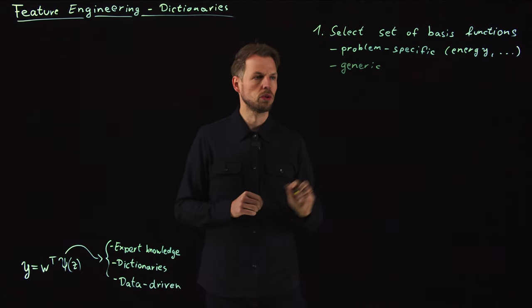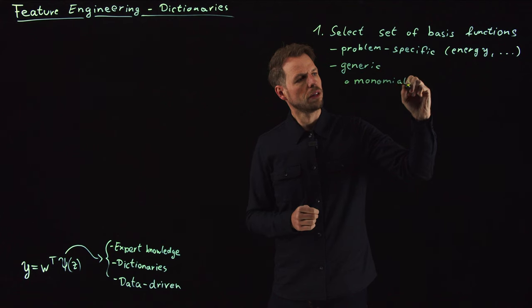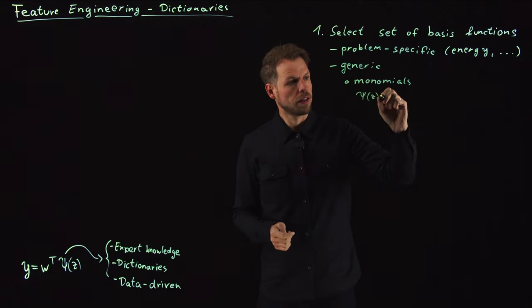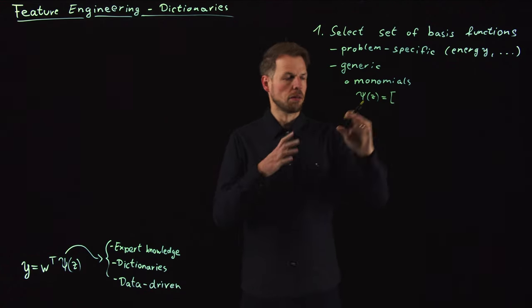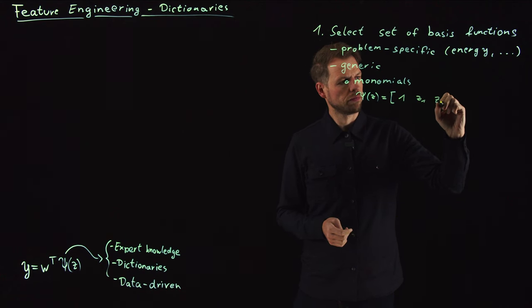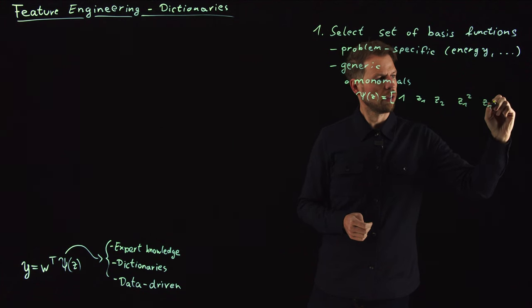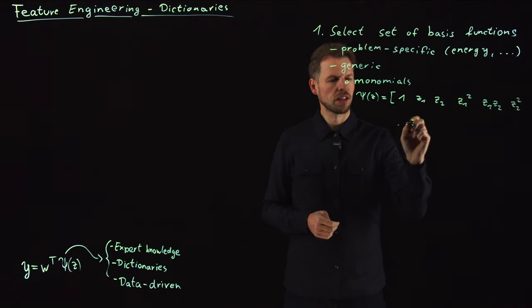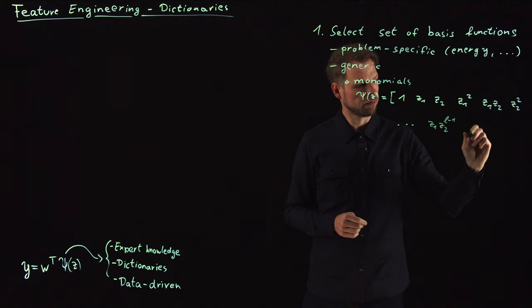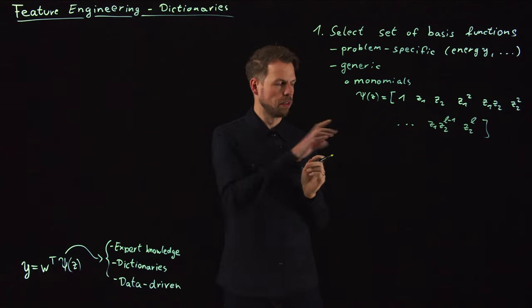One very popular approach to take is to take monomials. What this means is that you take polynomial terms but then one by one. So what your psi of z then becomes is, and I'm going to take an example with a two-dimensional input here, is that you get monomials of certain orders. So you take a constant function, you take maybe the z1, z2, and then you take combinations of these to a certain degree. So you can take z1 squared, z1 times z2, z2 squared, and so on. This can go on as long as you like until you are at the end at z1 to the power of l minus 1, and then z2 to the power of l. So whatever degree you take and you get all these combinations.